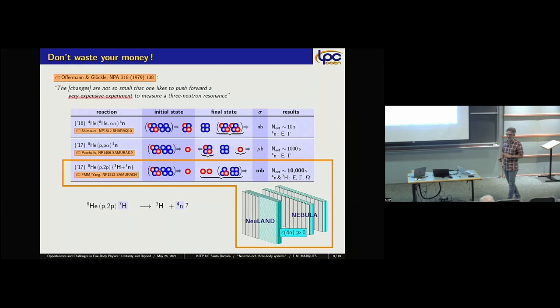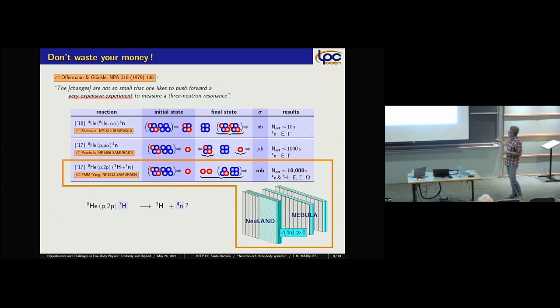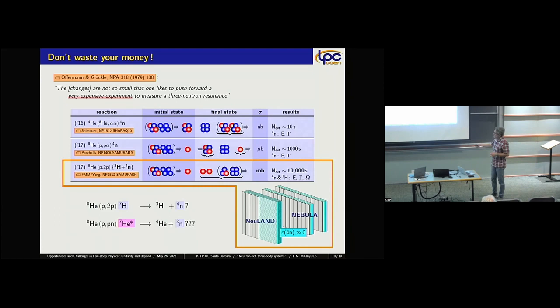So we didn't waste money looking for three neutrons — we wasted money looking for the tetraneutron, and the three-neutron system came for free. In the last campaign of experiments looking for the tetraneutron, we were the only group to actually detect the four neutrons using NEULAND and NEBULA detectors. The channel: use a proton target to remove one proton from helium-8, form hydrogen-7, and look for its decay to a triton and four neutrons. In the same reaction, a proton can remove a neutron from helium-8, populating excited states of helium-7 decaying to helium-4 and three neutrons.